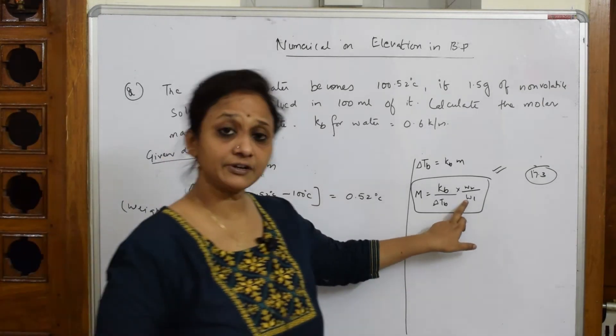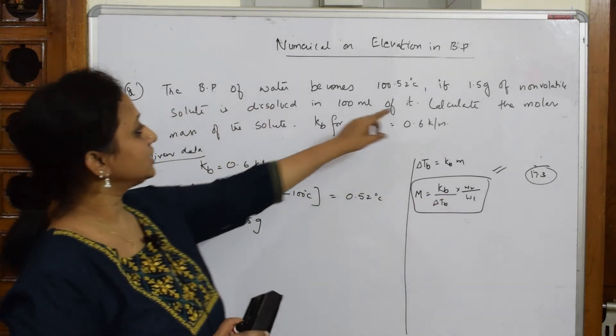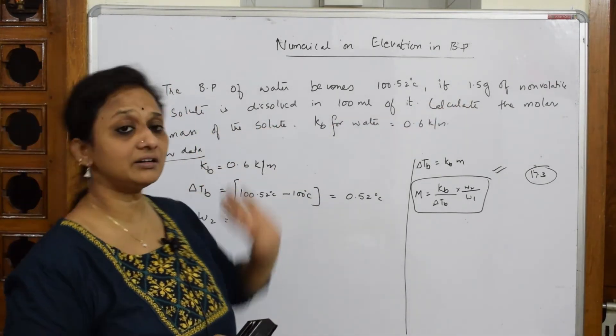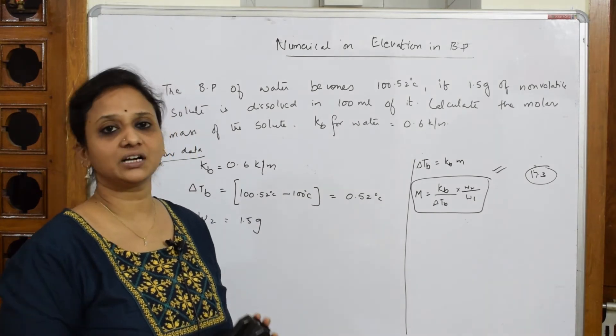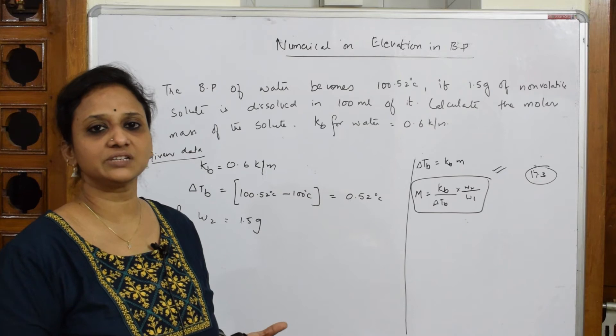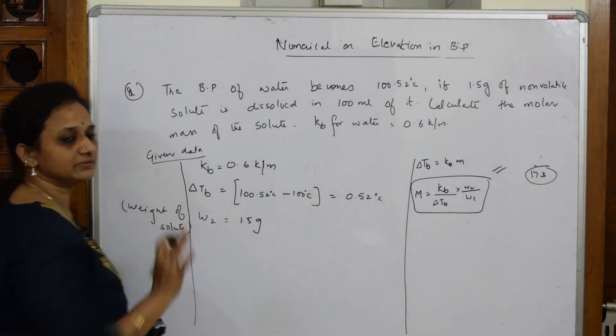So I should also have W1. What is W1 given to me? Here a bit different. They have given me 1.5 grams of non-volatile solute is dissolved in 100 ml of it. Nothing is given regarding the weight. Simple isn't it? It is given in 100 ml. Volume is given to us. Not a problem, it is easy. Let's see how can I do. Whenever volume is given to you, we very well know.